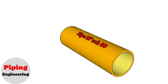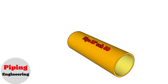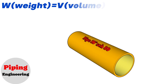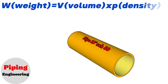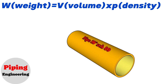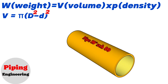Let's start our education video. The formula for finding the weight of the pipe is: Weight equals volume multiplied by the density of the pipe material. The density of the material is taken from the density chart of the materials. We have to calculate the volume ourselves using this formula: Volume equals π multiplied by (outside diameter squared minus inside diameter squared), divided by 4, multiplied by the length of the pipe.